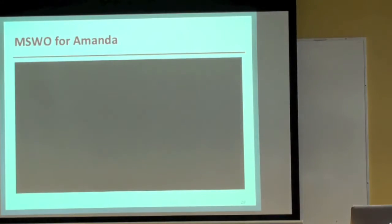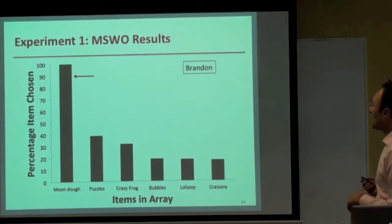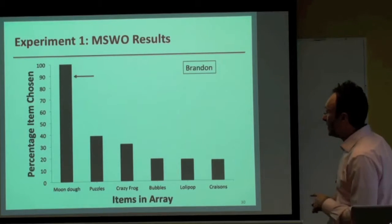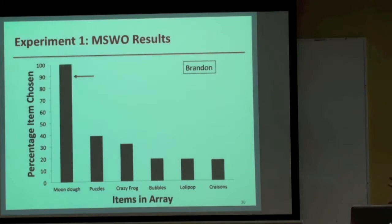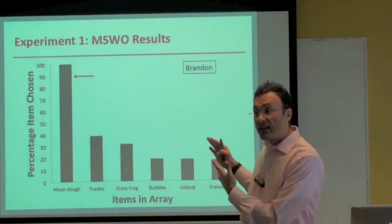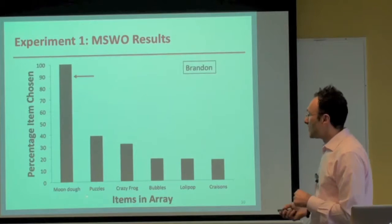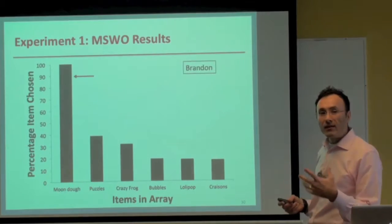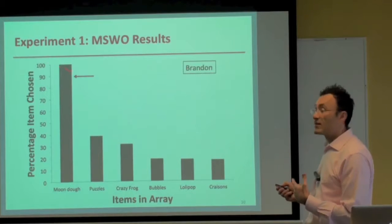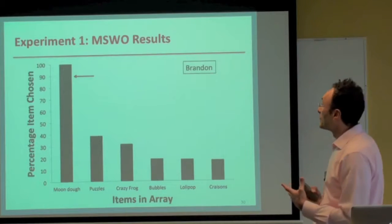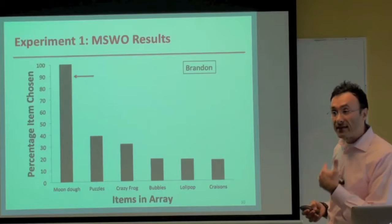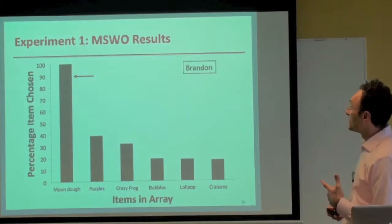Here's preference data for two participants illustrating the range. For Brandon — 100% of the time he chose Mondo, a Play-Doh-like substance, first, so we used that as his enriching stimulus. For Amanda, her highest-ranked item was raw cookie dough and second was cheesies. We weren't going to use food items for several reasons, including parental consent concerns, so we elected to use the highest-ranked non-food item — for her, that was her Three Little Pigs book.